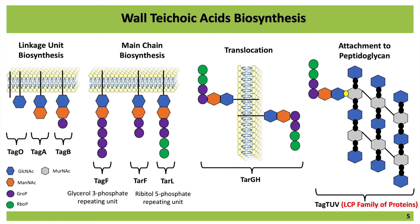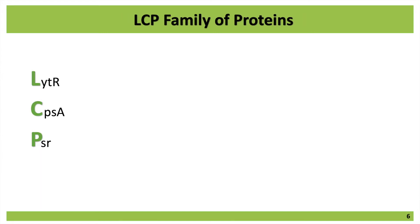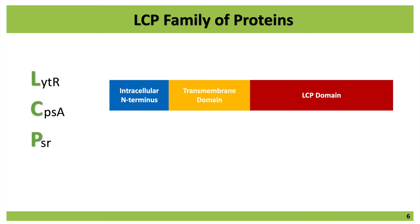This step is very interesting to target as it occurs outside of the cell — it's easier to inhibit, as an inhibitor molecule won't have to enter the cell to exert its effect. The LCP family of proteins — LCP stands for LytR-CpsA-Psr — has three types of proteins. They have a general topology that comprises an intracellular N-terminus, a transmembrane domain, and the LCP domain that is extracellular, highly conserved among these proteins, and has the phosphotransferase activity responsible for transferring the teichoic acid to the peptidoglycan.